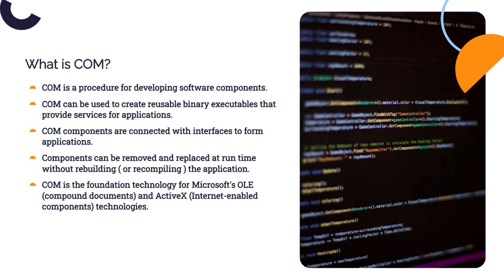So what is COM? COM is a procedure or standard through which developers can develop software components. COM can be used to create reusable binary executables that provide services for applications. COM components are connected with interfaces to form applications — interfaces are the backbone of COM technology. Components can be removed and replaced at runtime without rebuilding or recompiling the application.